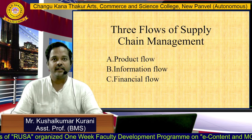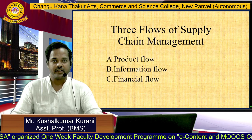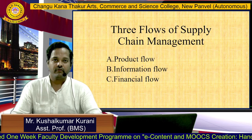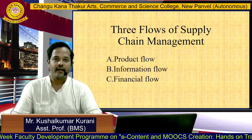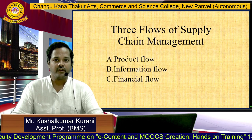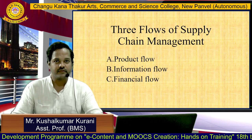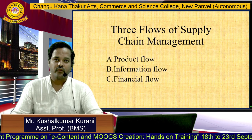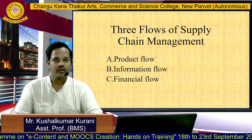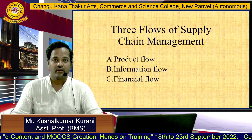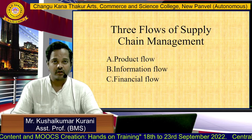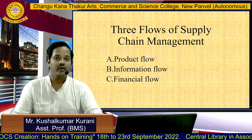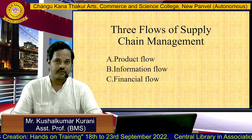The next slide is about the three flows of supply chain management. First is product flow. When we open any app online, we can see different types of products available. For each product, you can check the type of product, the specification, the price, and most importantly you can compare it with other products from other apps.